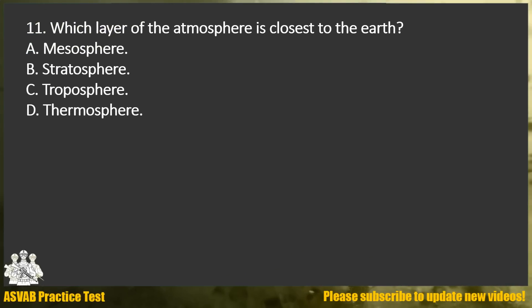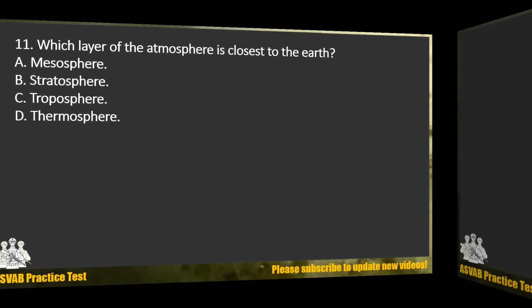Question 11. Which layer of the atmosphere is closest to the Earth? A. Mesosphere. B. Stratosphere. C. Troposphere. D. Thermosphere.